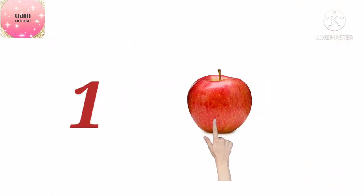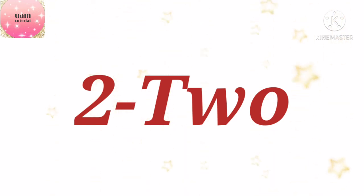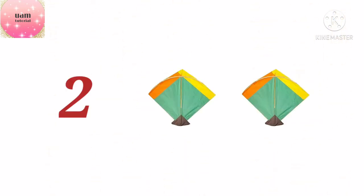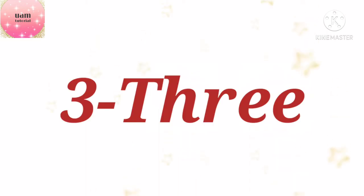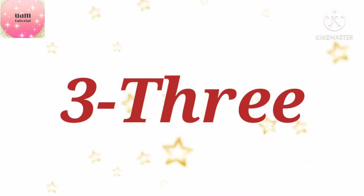Two — T-W-O — here we have two kites, one and two. Three — T-H-R-E-E — here we have three pigeons.